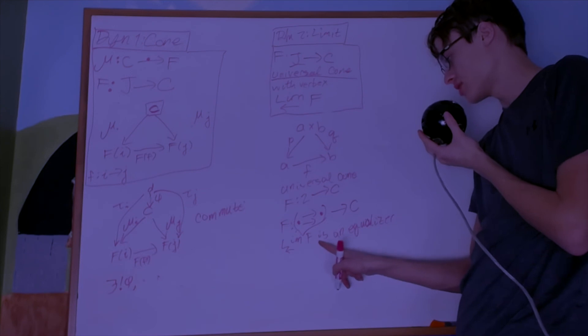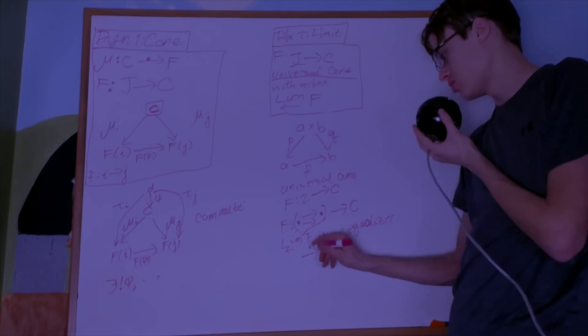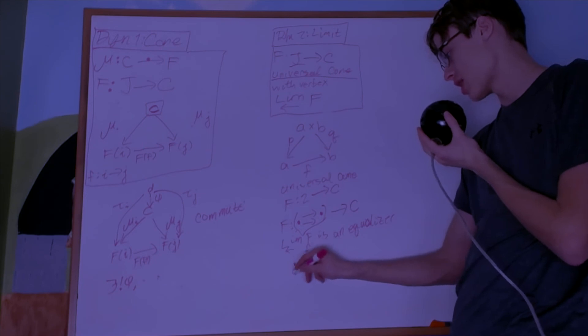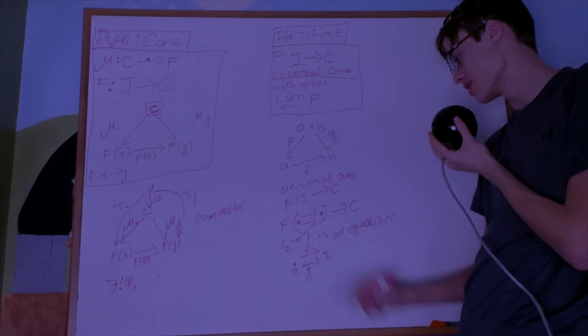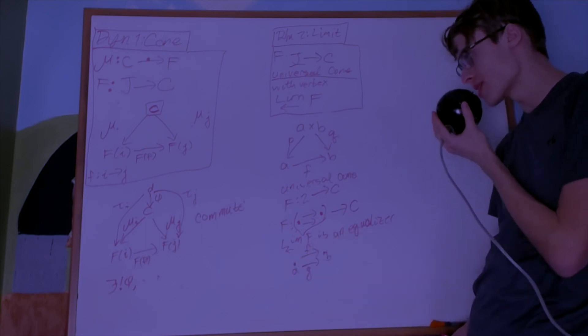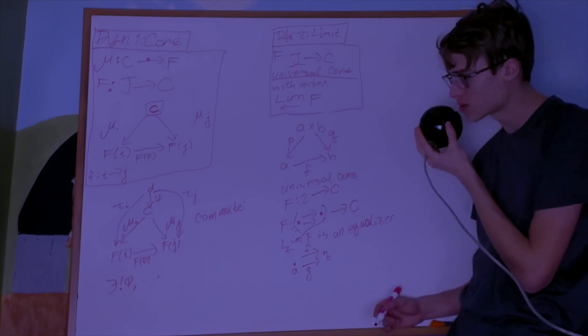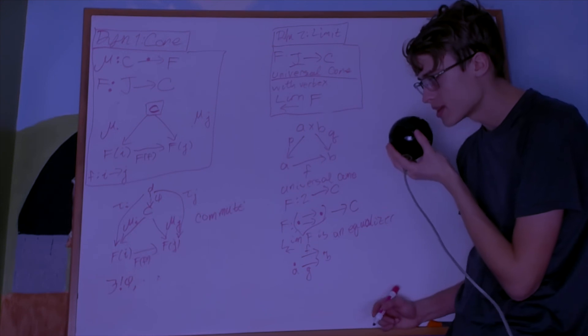And it consists of two arrows, f and g, and two objects, A and B, in the category. And it makes it into a universal diagram—into a universal cone, is what I meant to say.